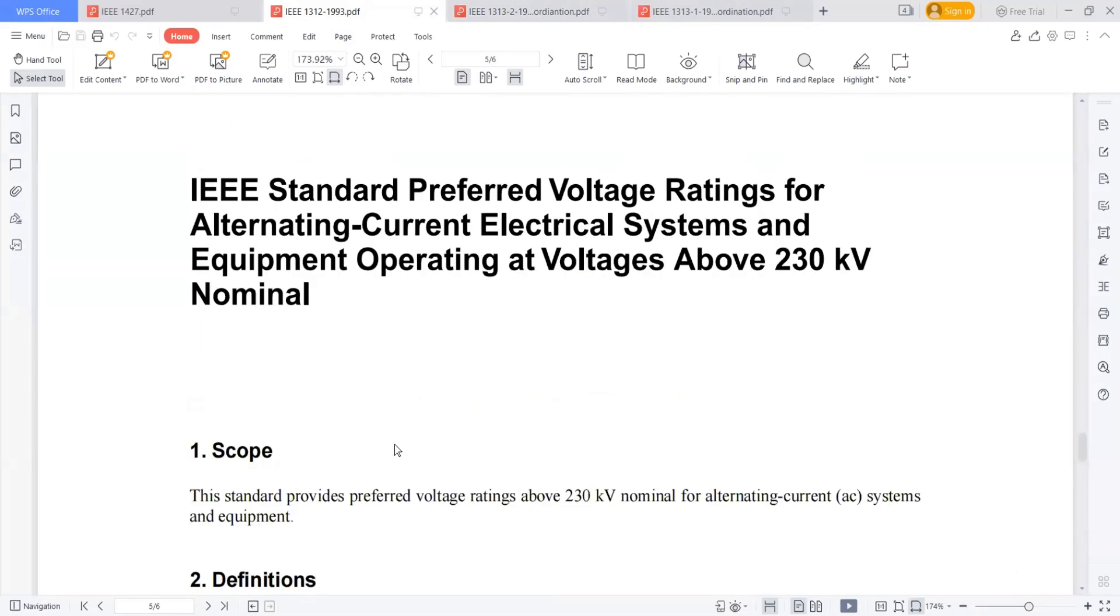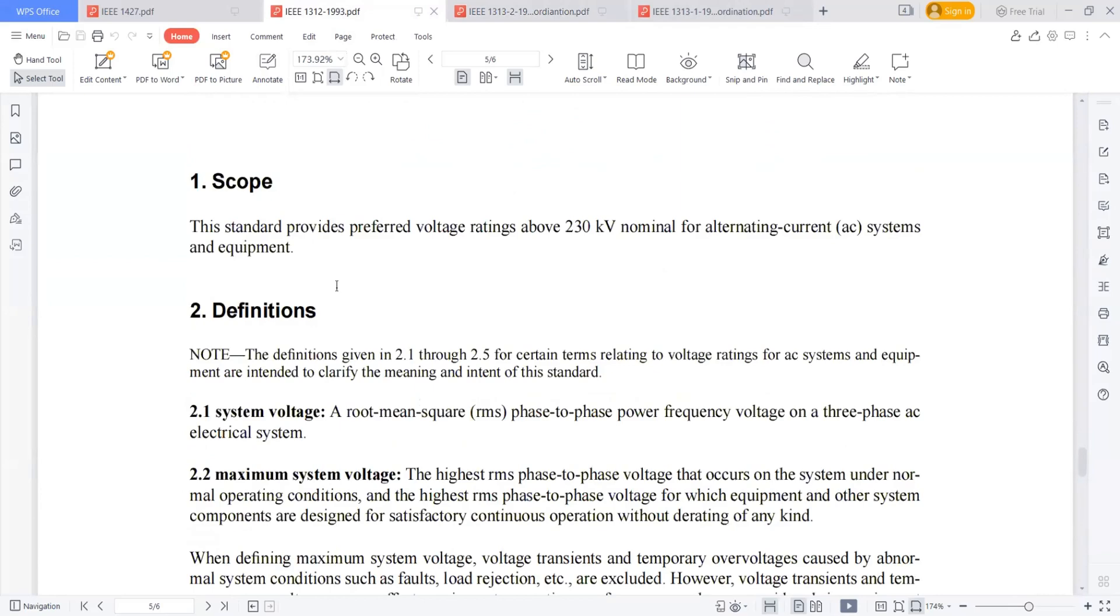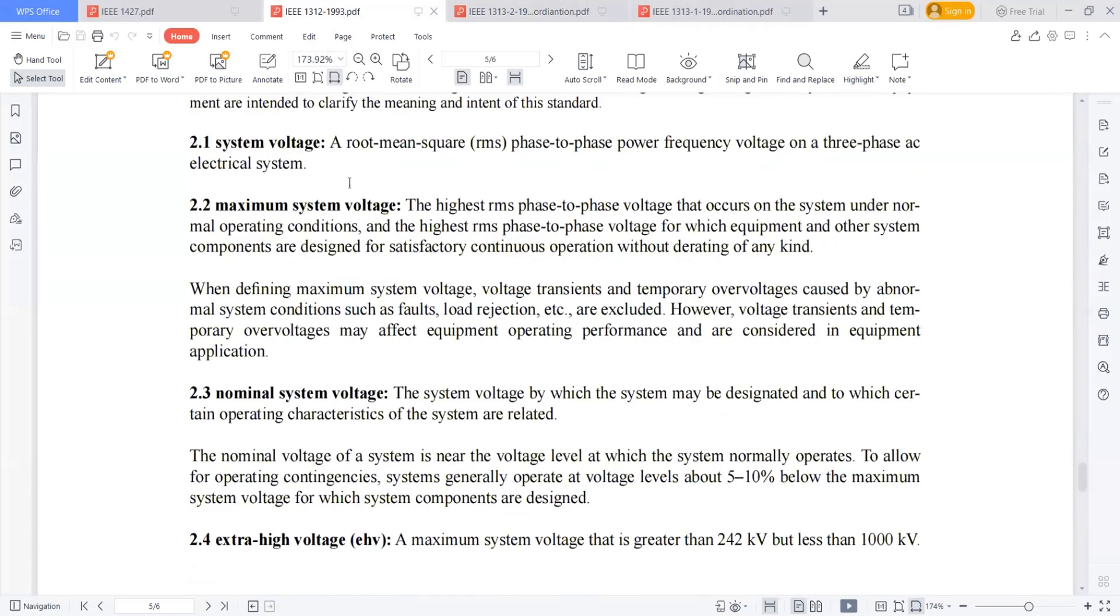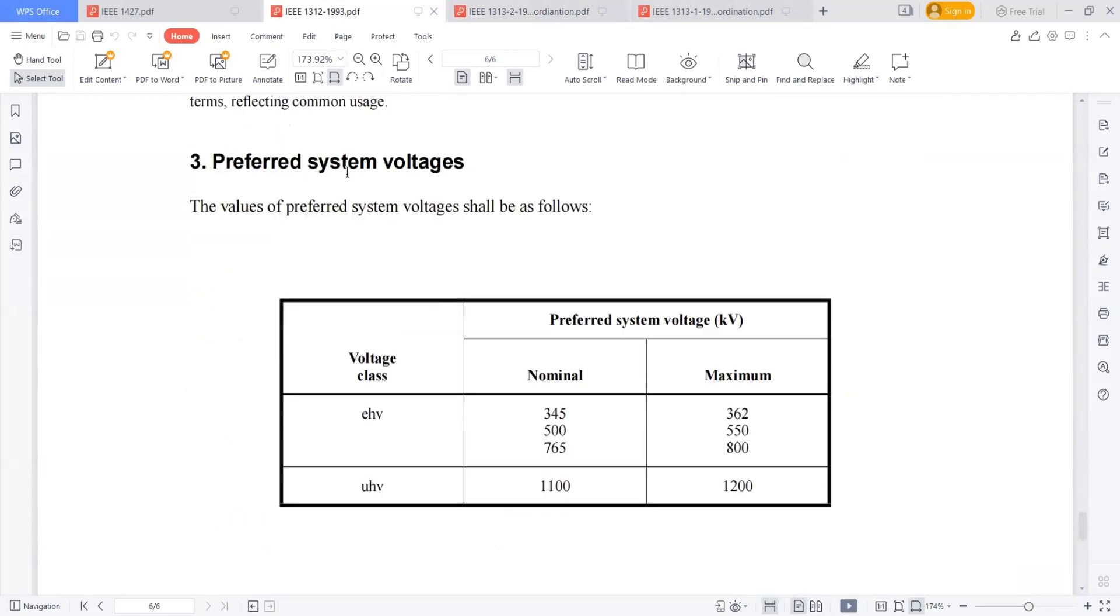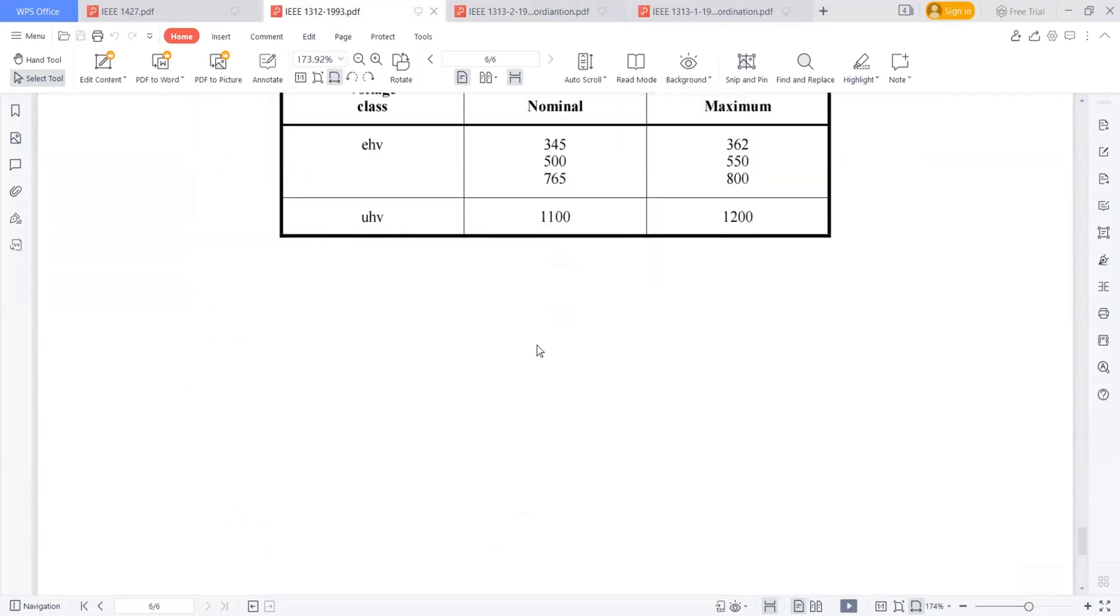The installation coordination study is explained with IEEE 1313 part 1 and part 2. This is the IEEE 1312 guide which talks about voltage preferred system voltages, just for information.